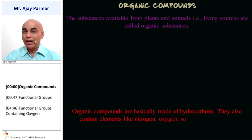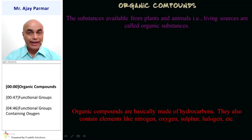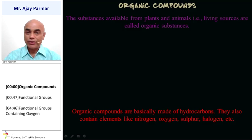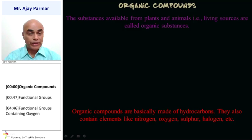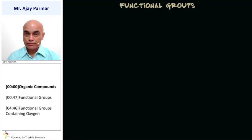Organic compounds basically are made up of hydrocarbons, that means they necessarily contain carbon and hydrogen. They may also contain some other elements like nitrogen, oxygen, sulfur, and halogens like fluorine, chlorine, bromine, iodine, etc. All these things might be present in organic compounds.